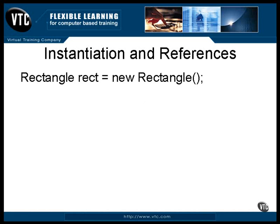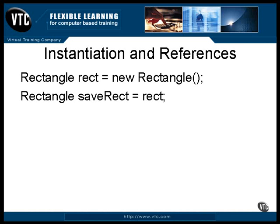From this point on, you can refer to the rectangle object by using the name of the reference. Using the reference, you can call the methods of the rectangle object, you can assign its address to another reference, you can pass the object to some other class as an argument to a method. This statement creates a new rectangle reference and stores the address of the original rectangle object into it. You now have two references addressing the same object.